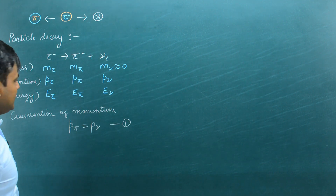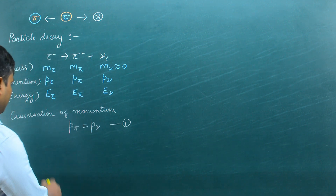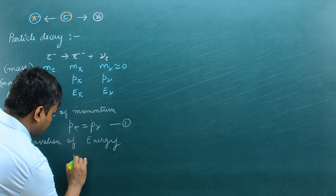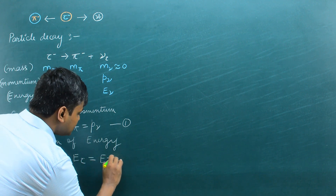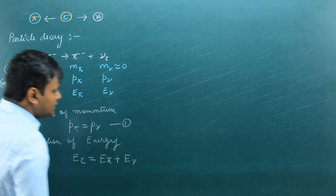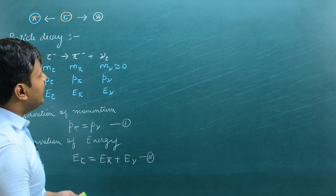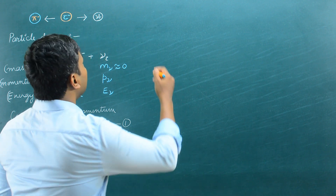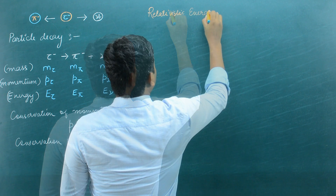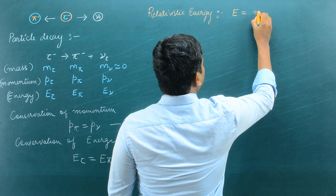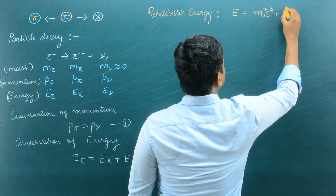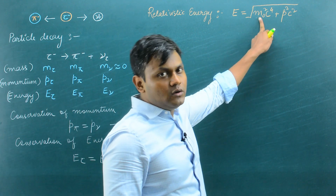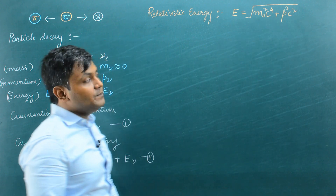Second, we can apply conservation of relativistic energy, which tells us that the total energy of the tau particle is equal to the total energy of the pi meson plus the total energy of the neutrino — this is point number two. We need to keep in mind that the total relativistic energy of any object is given by: E equals the square root of (m0 squared c to the power 4 plus p squared c squared). This is the general expression for relativistic energy of any particle with rest mass m0 and relativistic momentum p.